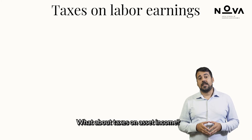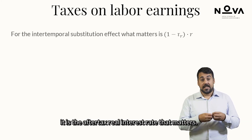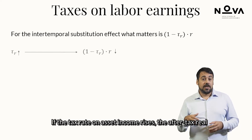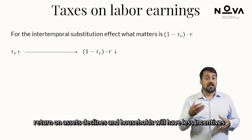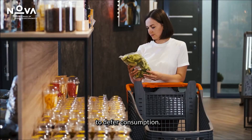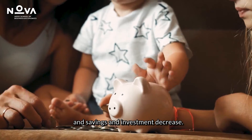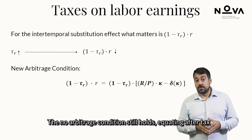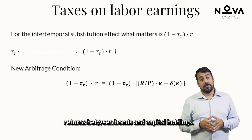What about taxes on asset income? In terms of the inter-temporal substitution effect, it is the after-tax real interest rate that matters. If the tax rate on asset income rises, the after-tax real return on assets declines, and households will have less incentive to defer consumption. Consumption today increases versus consumption tomorrow, and savings and investment decrease. The no-arbitrage condition still holds, equating after-tax returns between bonds and capital holdings.